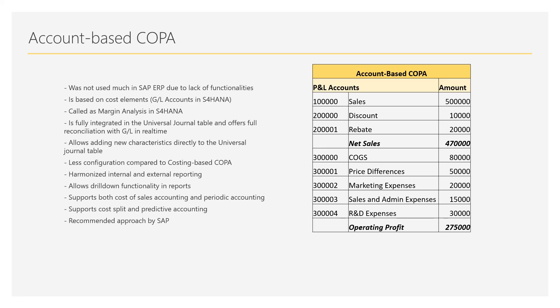Account-based COPA fetches all values from GL accounts directly, unlike costing-based COPA which requires configuring value fields to fetch values. This direct linkage with GL accounts is a major advantage because it is always real-time reconciled with the GL module. It is fully integrated with the universal journal table. SAP now officially calls account-based COPA as 'Margin Analysis' in S4 HANA.